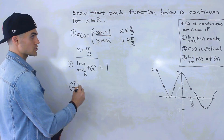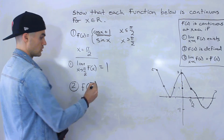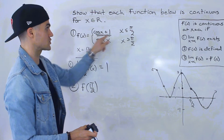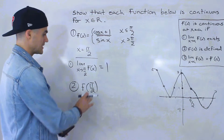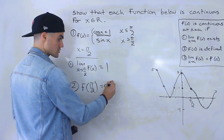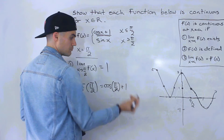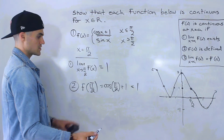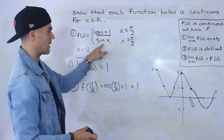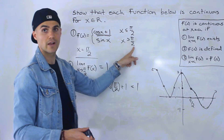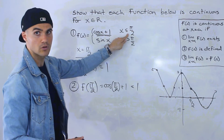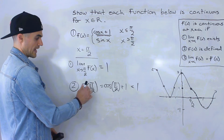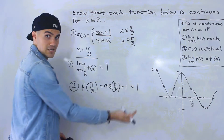The second condition is to show that f(π/2) is defined. Notice it is defined because the function is cos(x) plus one for x less than or equal to π/2. So f(π/2) equals cos(π/2) plus one, which is zero plus one, giving us one. It would not be proper to write sin(π/2) here, since sin(x) applies for x greater than π/2, while cos(x) plus one applies for x less than or equal to π/2.